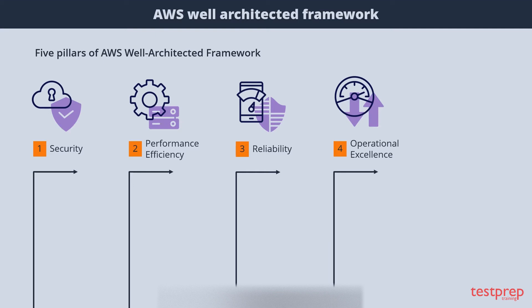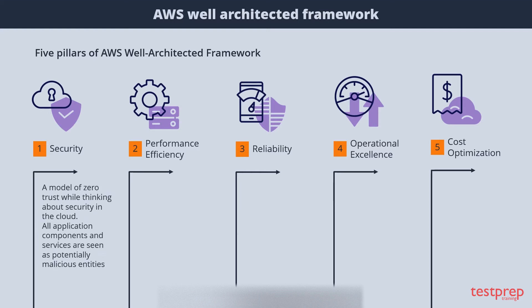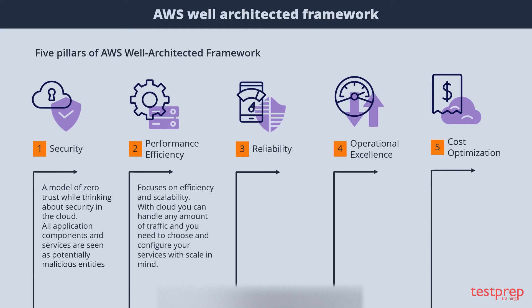The five pillars also include four, Operational Excellence, and five, Cost Optimization. In the Security pillar, we use a model of zero trust while thinking about security in the cloud — all application components and services are seen as potentially malicious entities. The Performance Efficiency pillar focuses on efficiency and scalability. With the cloud, you can handle any amount of traffic and need to choose and configure your services with scale in mind.